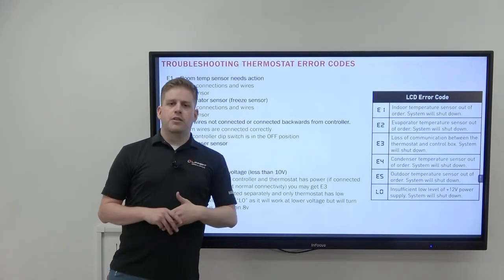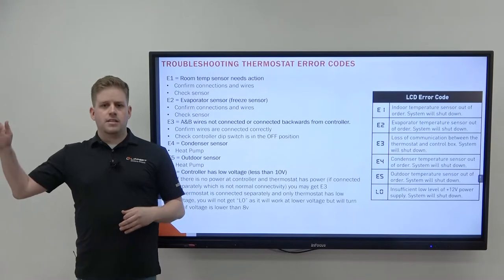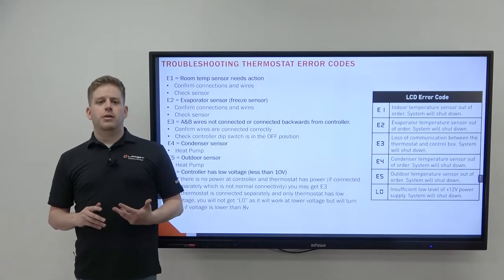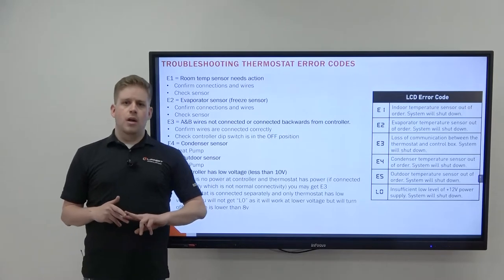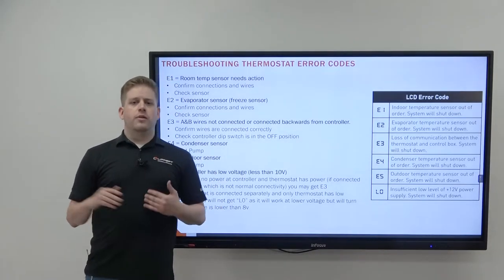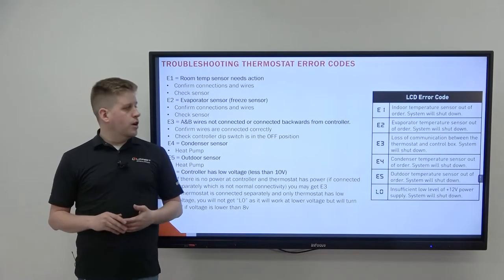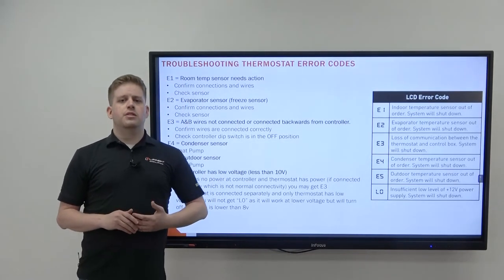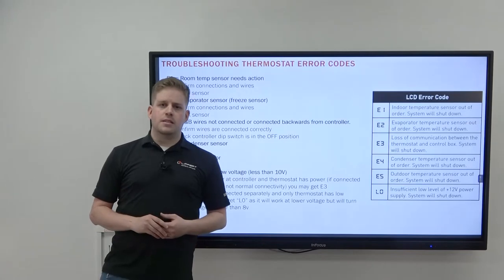E3 is a loss of communication between the control box and the thermostat. Either the A and B communication wires are backwards, or there is some sort of damage in the wire between them. Go through and check both of those options and repair as necessary.